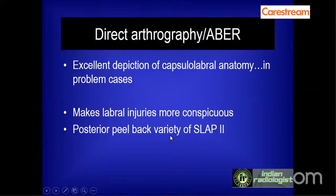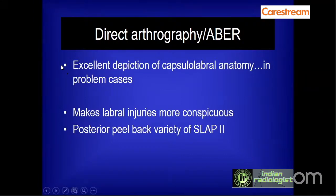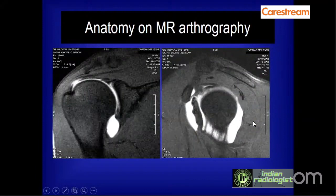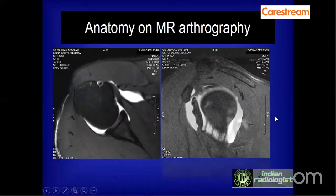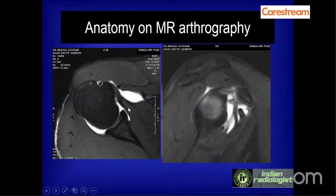Direct arthrography is still the gold standard. While some believe plain MR is sufficient to diagnose SLAP lesions, there are controversies. Capsulo-labral anatomy is often well seen on direct arthrography, and for complex SLAP lesions like the posterior peel back lesion, arthrography becomes imperative. The labrum anatomy can be beautifully seen on arthrography, including superior and inferior labrum, glenohumeral ligaments, subscapular tendon, anterior and posterior labrum, and MGL.